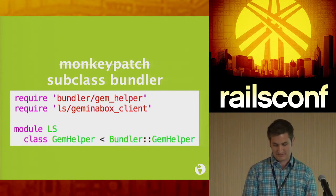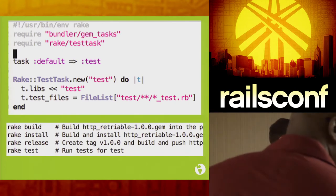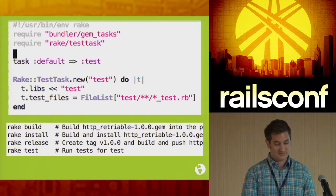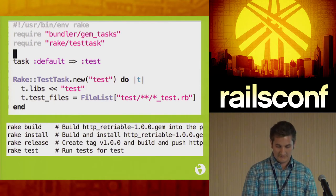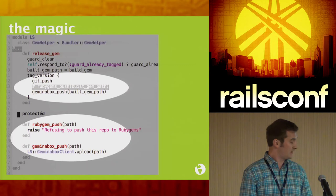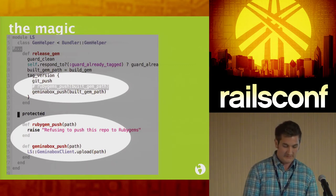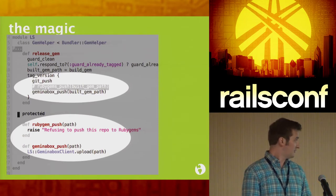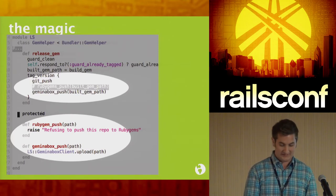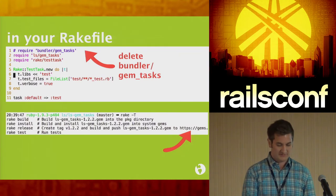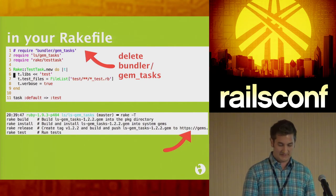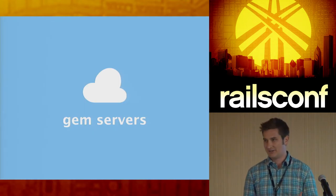In your Rakefile, `Bundler::GemTasks` gives you build, install, and release — by default pushing to RubyGems. We subclassed it to say: push to Gem in a Box, our internal gem server. If you even try to call the protected push method it gives an error. Once we released that small gem, we put `LS::GemTasks` in place of `Bundler::GemTasks` in all other gems, so by default they go to our gem server.